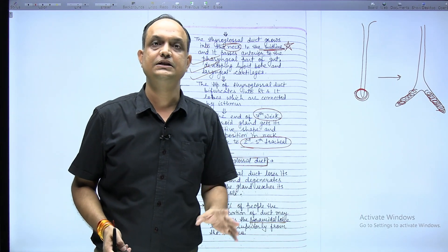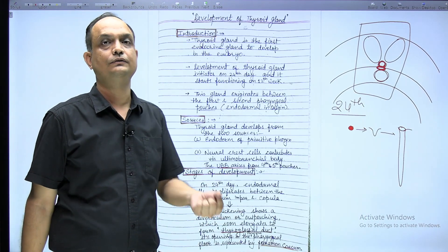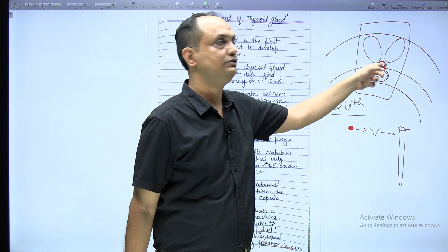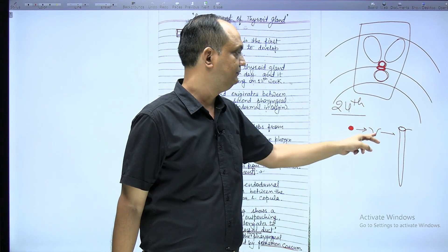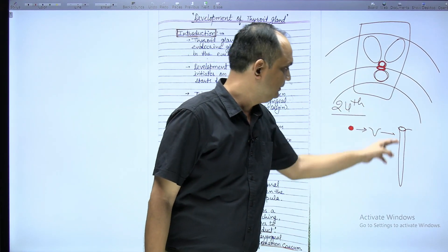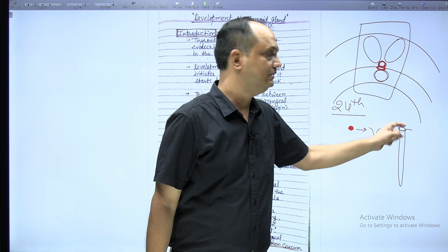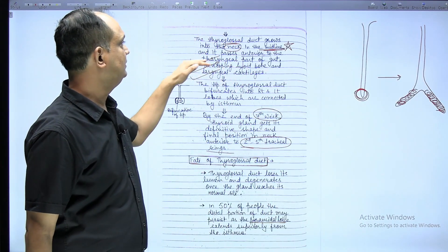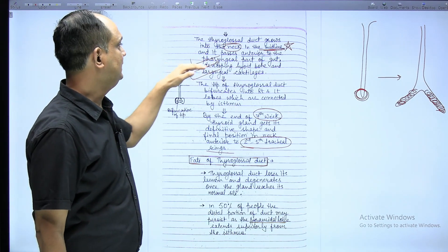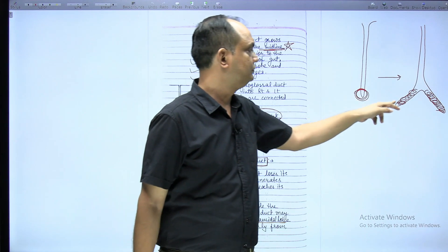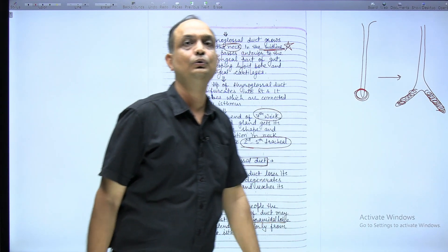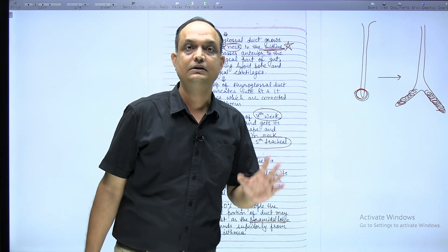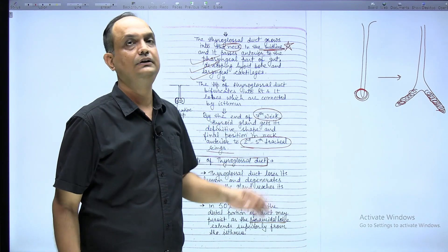The stages start from the appearance of the thyroid primordium between the two swellings, the tuberculum impar and copula. From this thyroid primordium, a diverticulum forms. The diverticulum elongates to form the duct, known as the thyroglossal duct. The opening or point of invagination is known as the foramen cecum. The duct crosses anterior to the pharyngeal part of the gut, the developing hyoid bone, and the laryngeal cartilages. The tip shows proliferation and bifurcation to form the two lobes and isthmus. The gland receives its final position by the seventh week of intrauterine life.